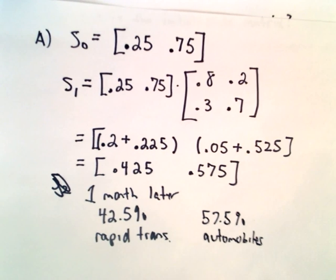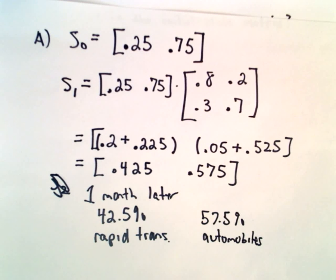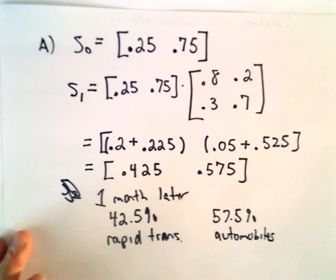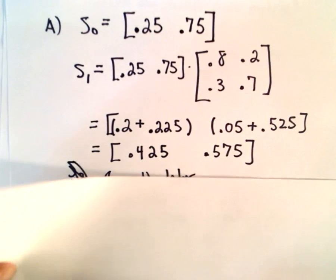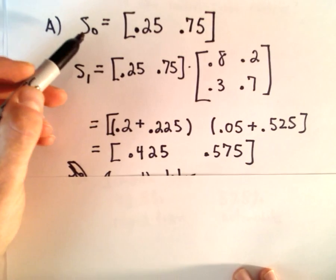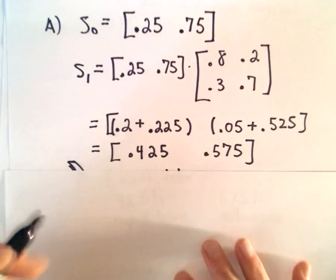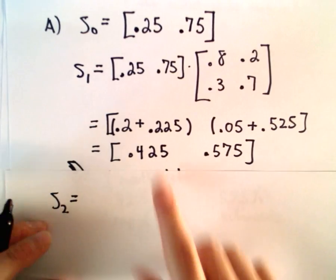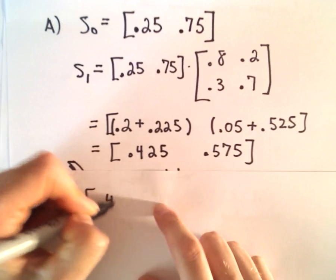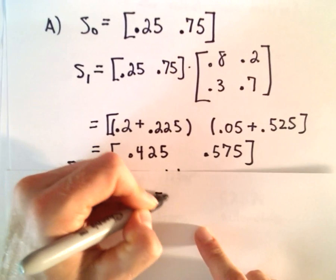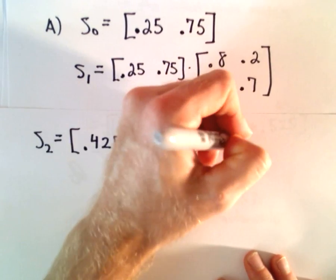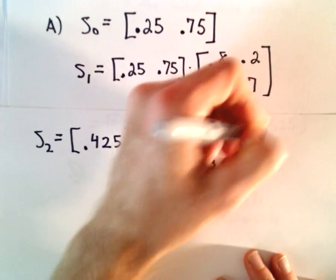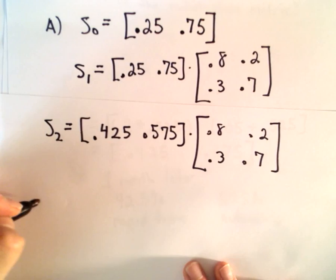Now to calculate the proportion of people using the rapid transit system two months later, or one month after this happens, we take the proportion after one month and multiply that by our transition matrix, which was 0.8, 0.2, 0.3, and 0.7. We're just doing the exact same thing one more time.